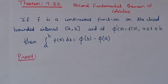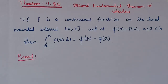If f is a continuous function on the closed bounded interval [a, b], and if phi-dash of x equals f of x, where a is less than or equal to x less than or equal to b, then the integral from a to b of f(x) dx equals phi(b) minus phi(a).